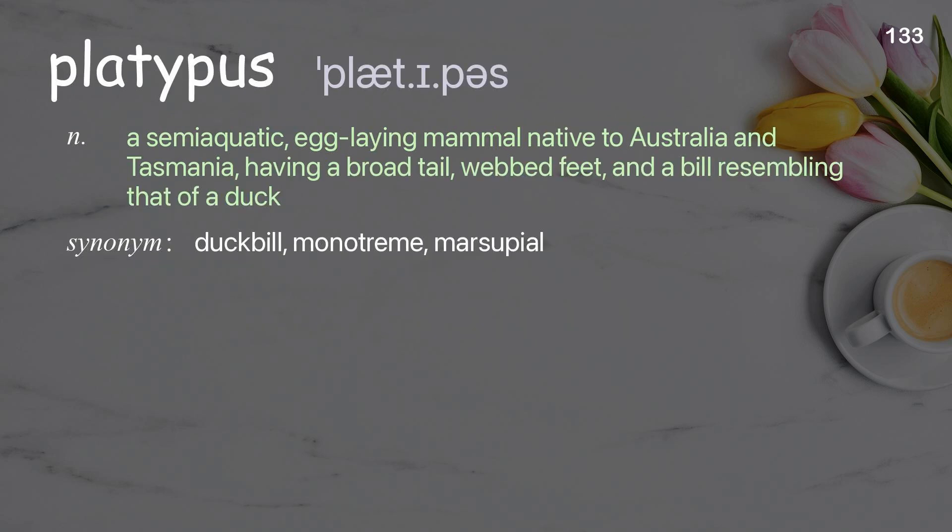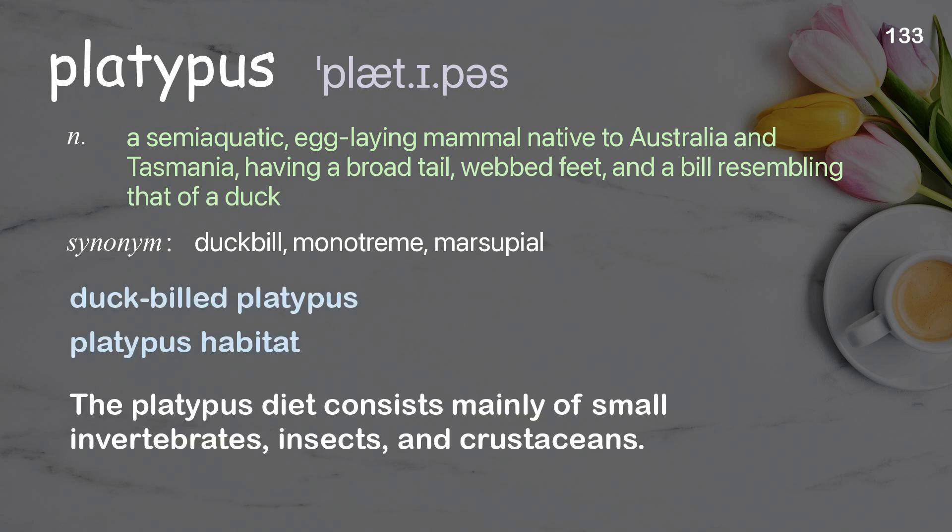Platypus: a semi-aquatic, egg-laying mammal native to Australia and Tasmania, having a broad tail, webbed feet, and a bill resembling that of a duck. Examples: duck-billed platypus, platypus habitat. The platypus diet consists mainly of small invertebrates, insects, and crustaceans.